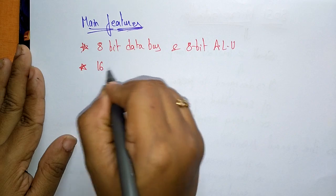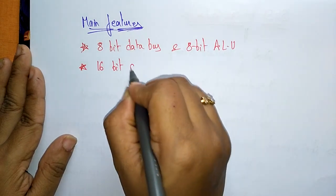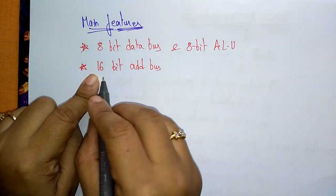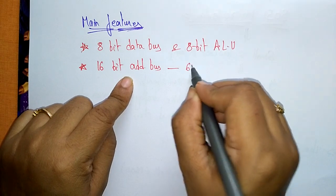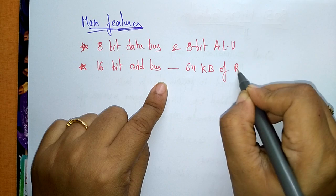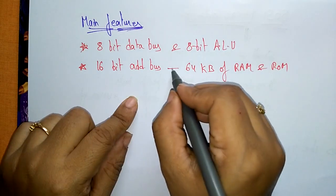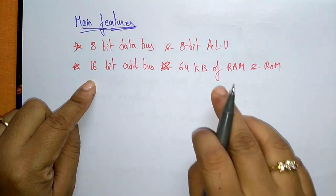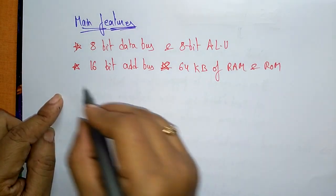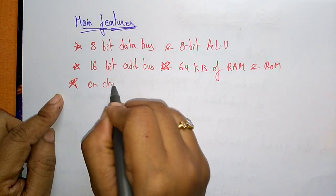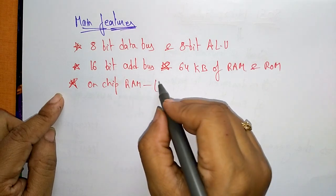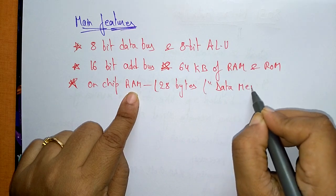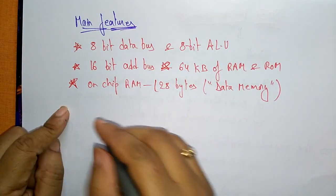The next feature: 8051 consists of a 16-bit address bus. So the 8051 microcontroller has an 8-bit data bus and a 16-bit address bus. This 16-bit address bus can transfer 64 kilobytes of RAM and ROM. It also has on-chip RAM of size 128 bytes. The RAM is where data memory is stored, and it also has on-chip ROM.